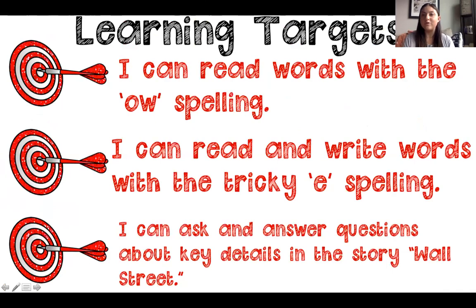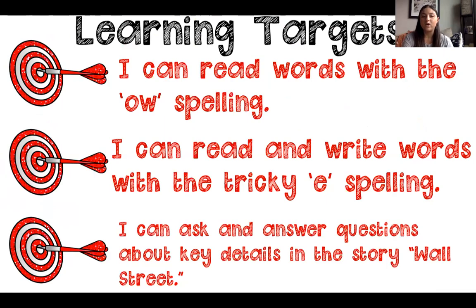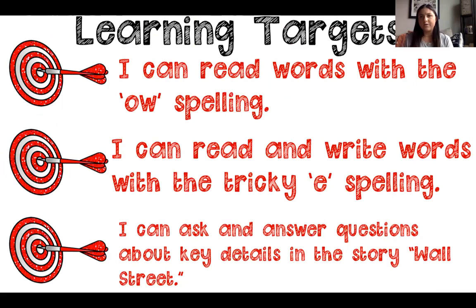Let's review our goals for today. Can we read words with the OW spelling? Yes — we learned OW can say O and OW, like a tug of war. I can read words with the tricky E spelling — E can say its name like in 'me' or 'she,' or say its short sound like in 'yellow' or 'lemon.' That's why it's always important to try out both sounds, like saying 'secret' or 'secret.' And I can ask and answer questions about key details in the story Wall Street — we did that too. Great job today, second graders! I look forward to next time with lesson 12. Bye!